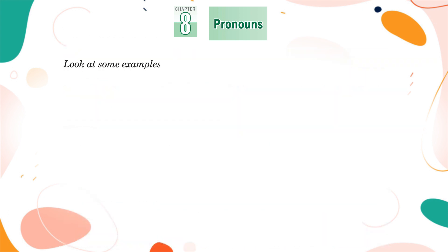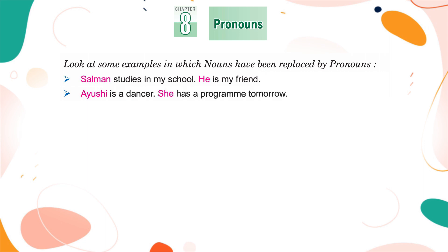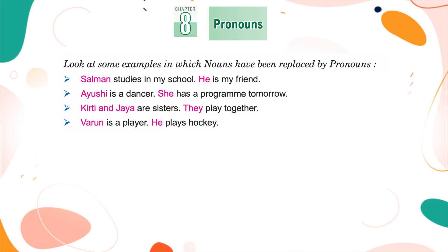Look at some examples in which nouns have been replaced by pronouns. Salman studies in my school. He is my friend. Ayushi is a dancer. She has a program tomorrow. Kirti and Jaya are sisters. They play together. Varun is a player. He plays hockey.